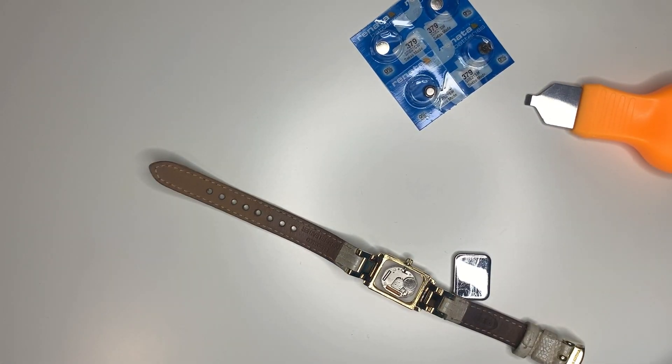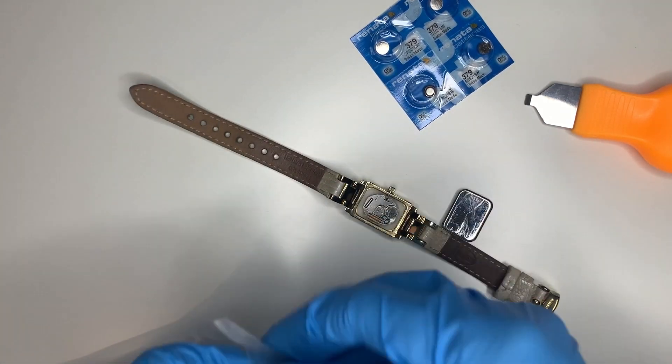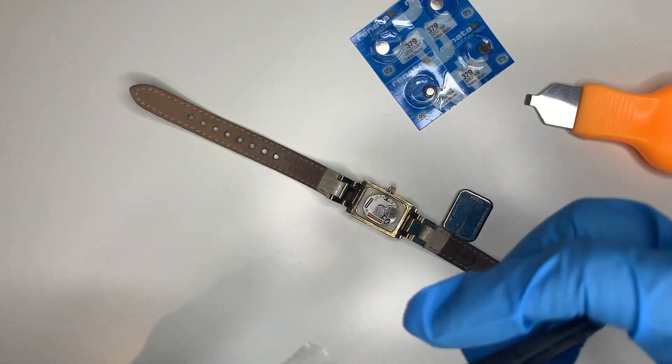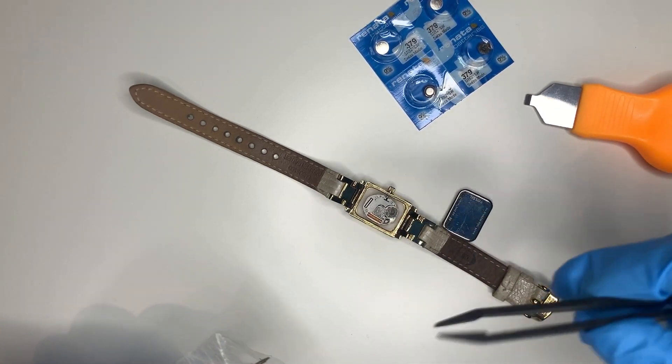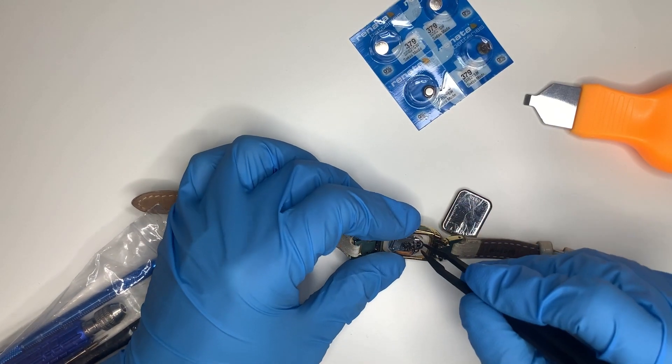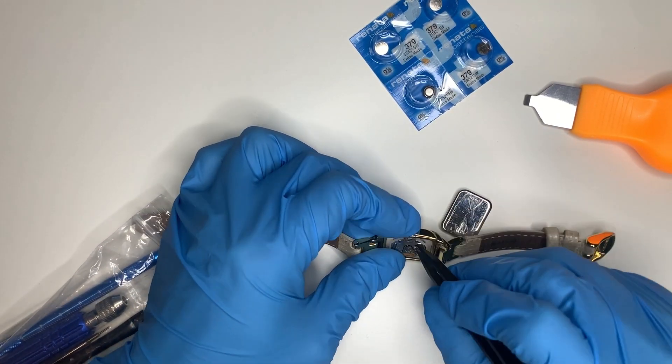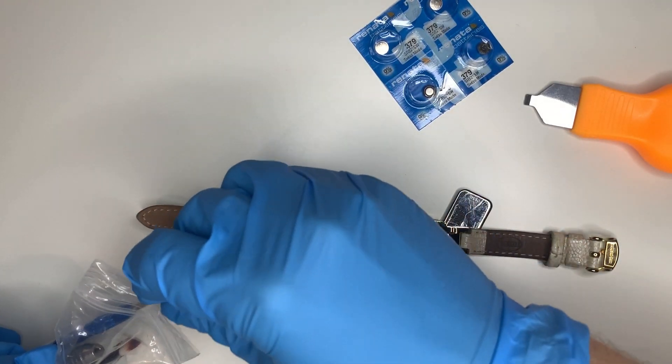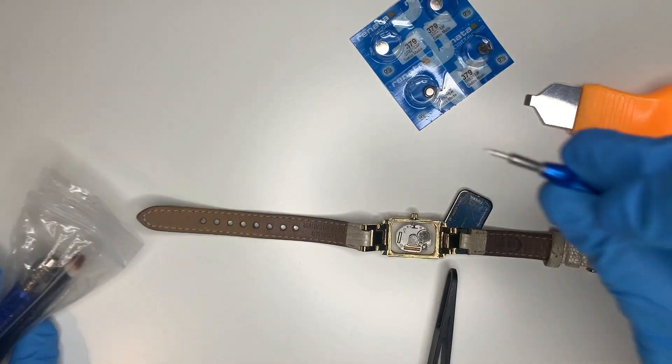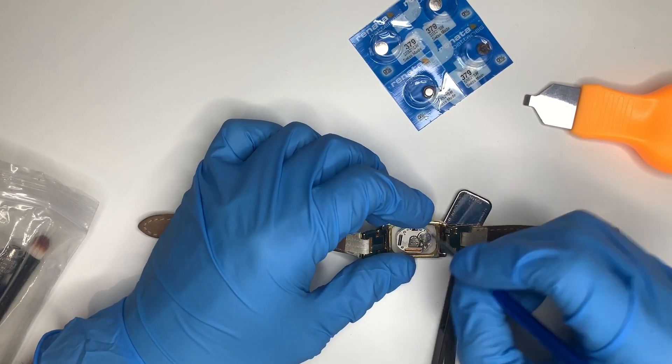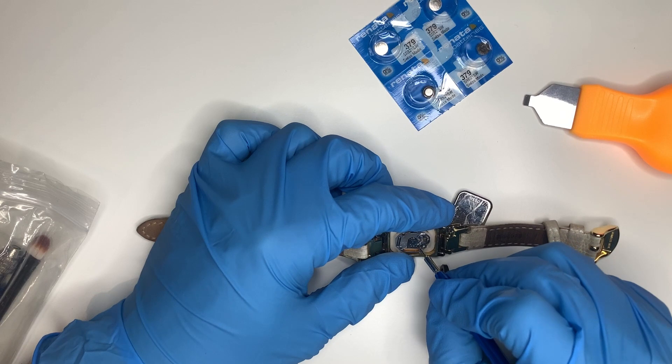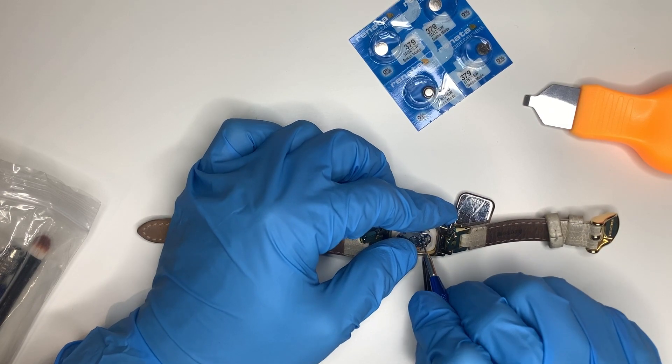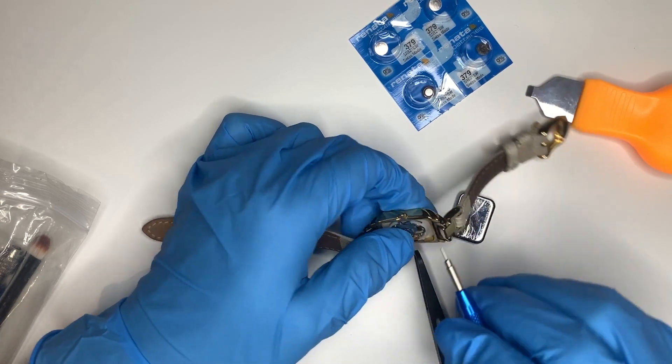Now I need to get that battery out, so you just need some sort of little prying tool. I'm going to try with tweezers to try and flick the battery out. I'll use this little metal tool instead. Just need something to flick the battery out. Need to hold on to the movement so it doesn't flick out.